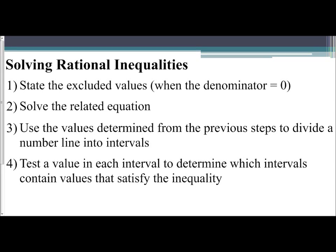This video is going to cover the last concept in this lesson, which is how to solve rational inequalities. When solving rational inequalities, you want to follow this general setup: first, state the excluded values by looking at when the denominator equals zero. Then treat it like an equation — temporarily ignore the inequality and solve. From there, use the excluded values and solutions to divide a number line into intervals, then test a value in each interval to determine where the inequality is true. The new concept to focus on is steps three and four.